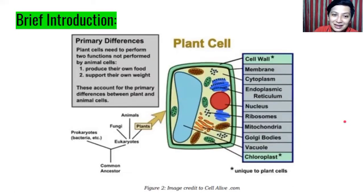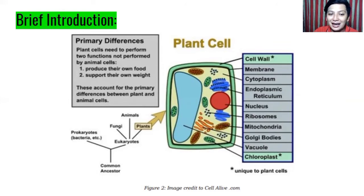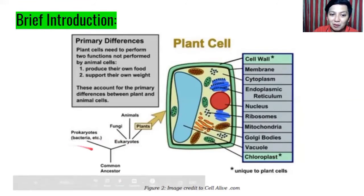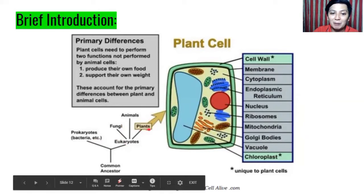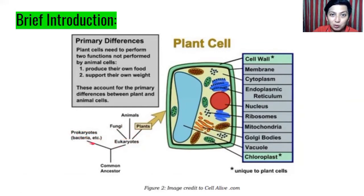This is an example of a plant cell. The primary differences are plant cells need to perform two functions not performed by animal cells: number one, produce their own food; number two, support their own weight. This type of cell can be found in prokaryotes or bacteria. Common ancestor can also be found in fungi, plants, and eukaryotes. Eukaryotes have a true nucleus; prokaryotes do not have a true nucleus.